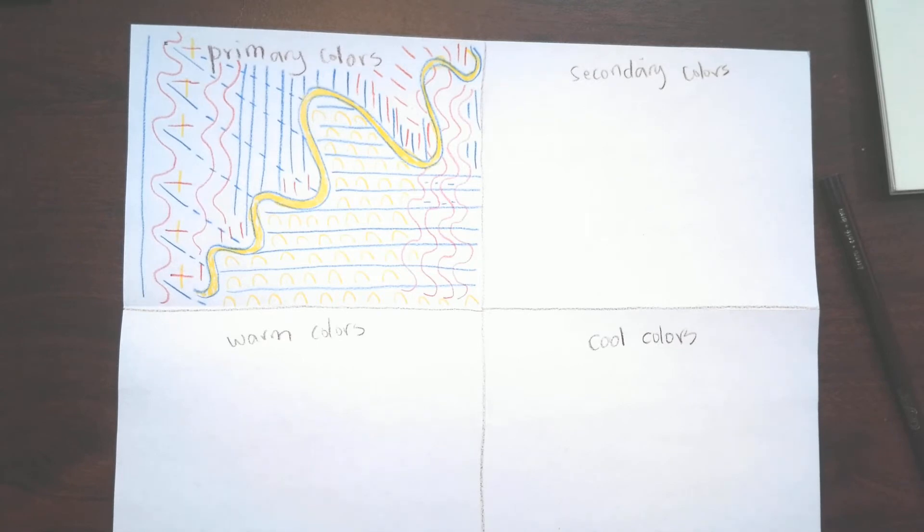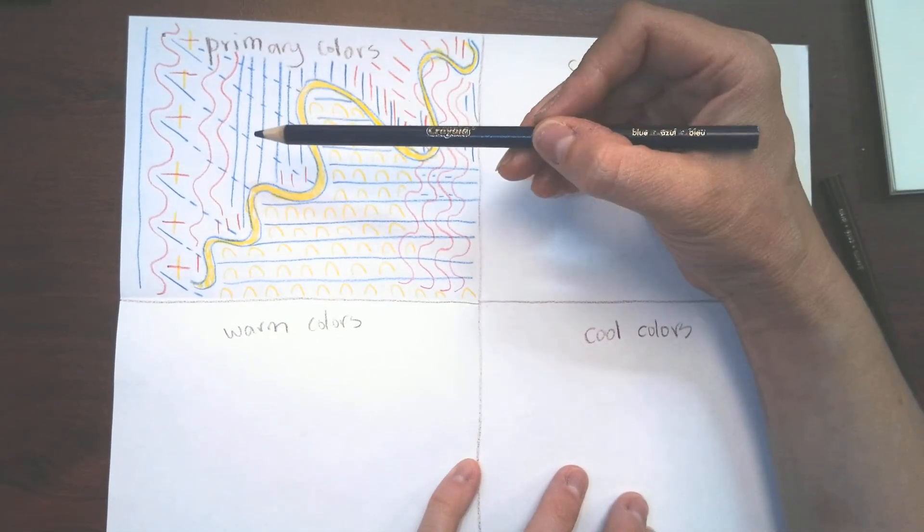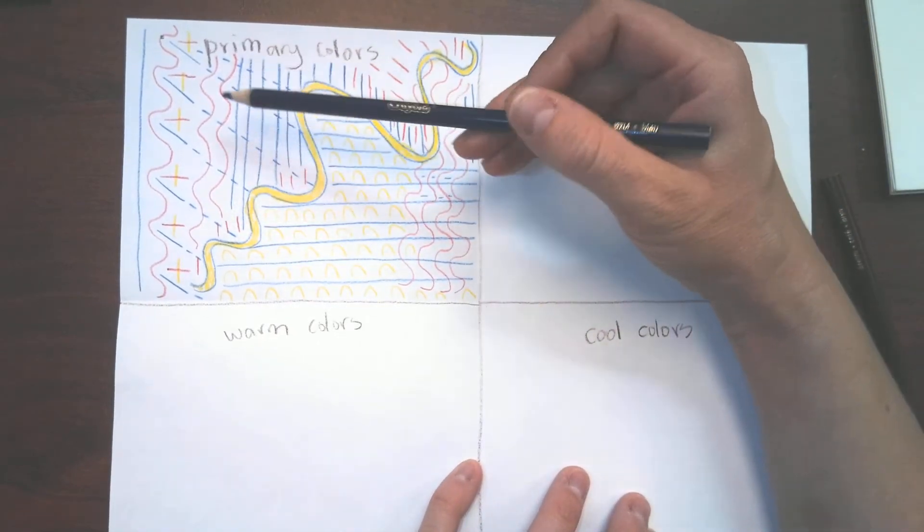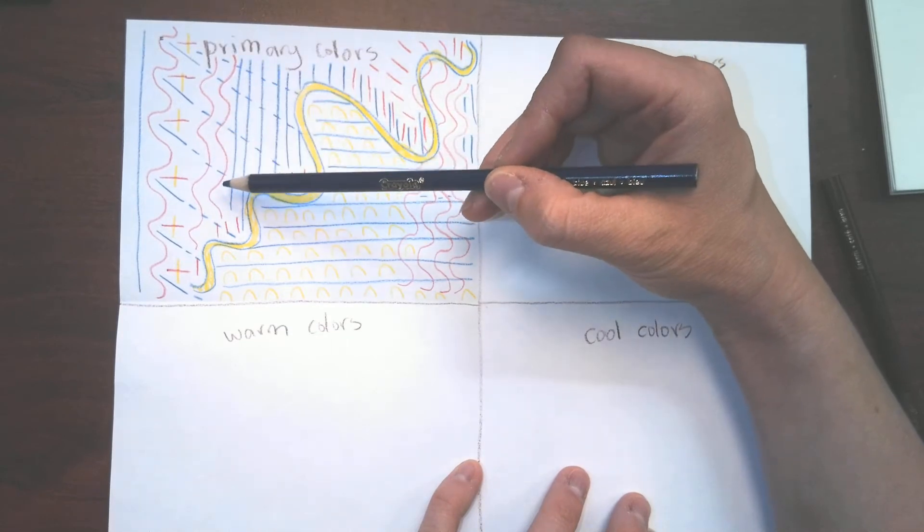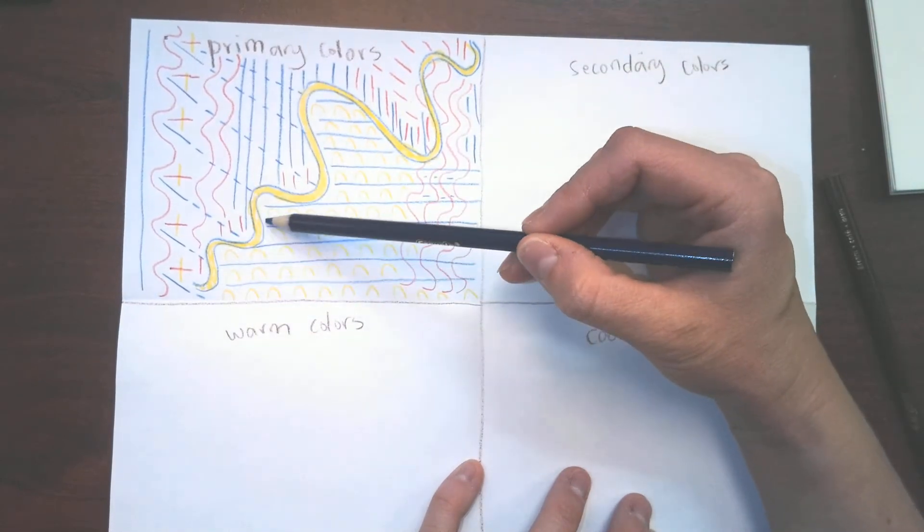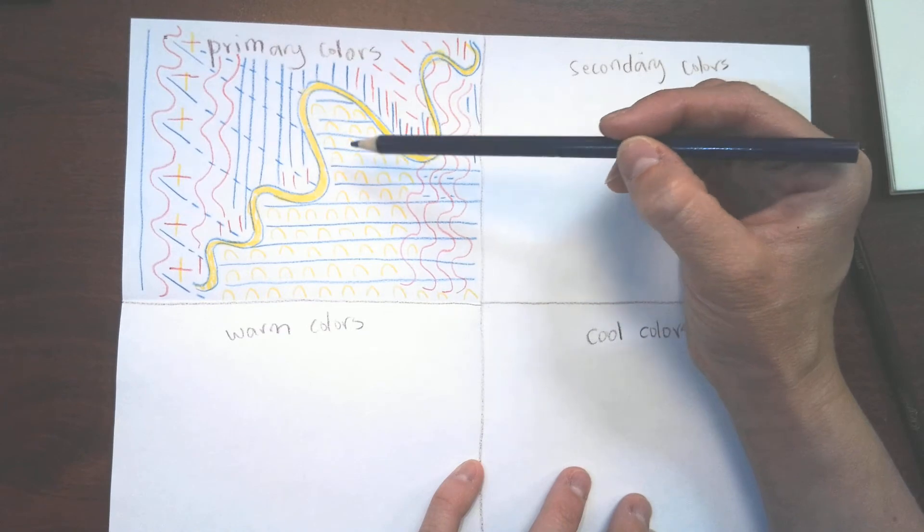So let's look at all the different types of lines that I put in here. I have vertical lines, more wavy lines, I have this really thick line, lots of thin lines.